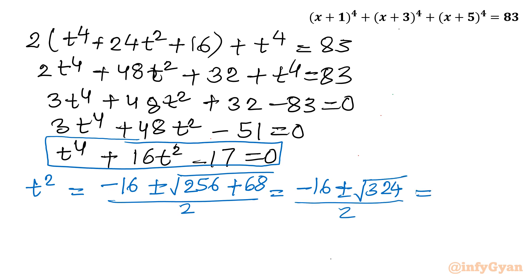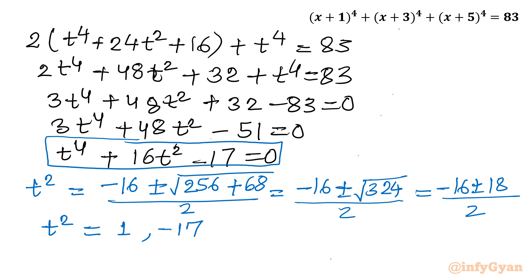The square root of 324 is 18. So t² = (−16 ± 18) / 2. Taking the plus sign: t² = 2/2 = 1. Taking the minus sign: t² = (−16 − 18)/2 = −34/2 = −17. There are two solutions: t² = 1 and t² = −17. Since a square cannot be negative, t² = −17 gives complex solutions, which are rejected.